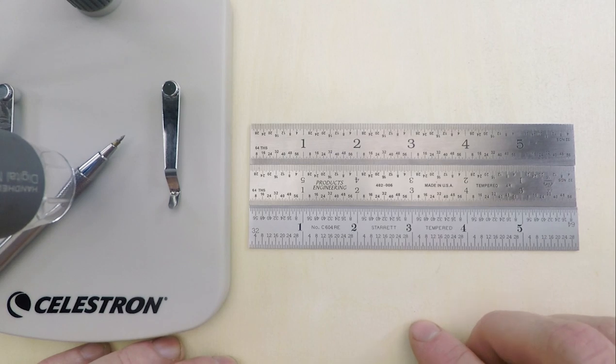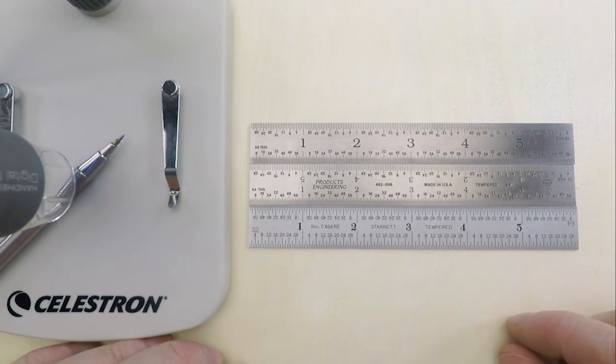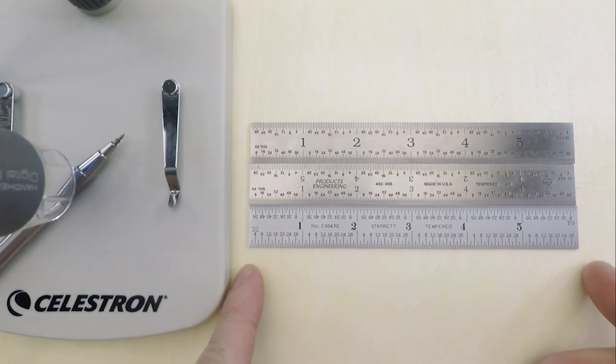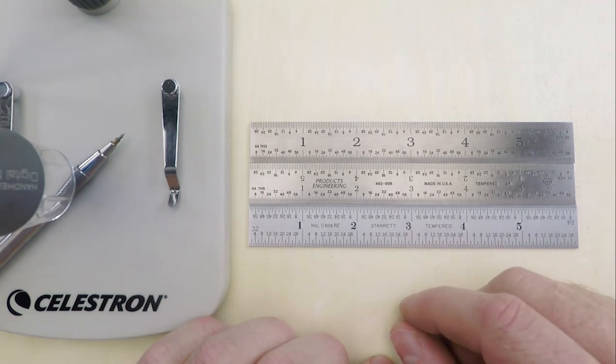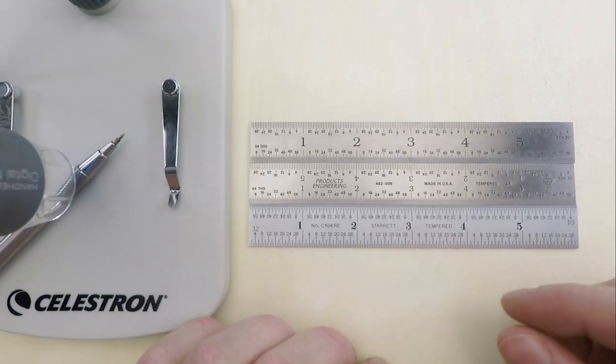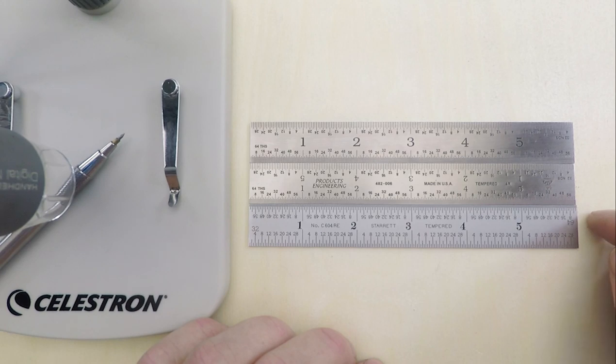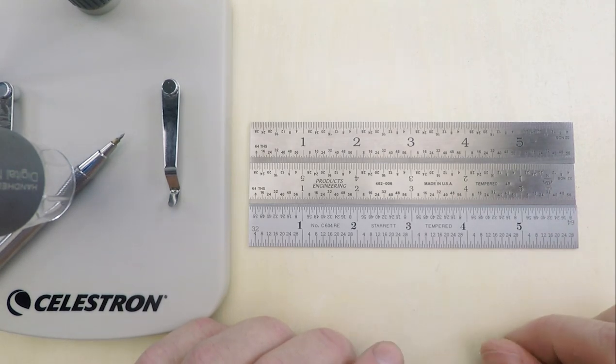Now, obviously the most important concern with a measuring tool is that it's accurate. But that's something we can pretty much take for granted here. Modern manufacturing tolerances are just so much finer than these distances that you can basically bet the farm that any one of these rules is gonna be just as accurate as any other. At least to any reasonable standard.